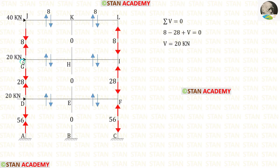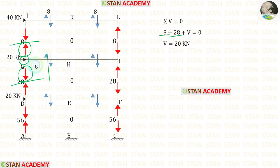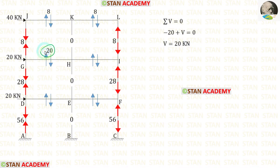Now let us take joint G. This force is acting upwards, so that will be positive. This force is acting upwards, so that will be positive. This force is acting upwards, so that will be positive. Finally, for V we are getting 20 kN. Let us apply that.